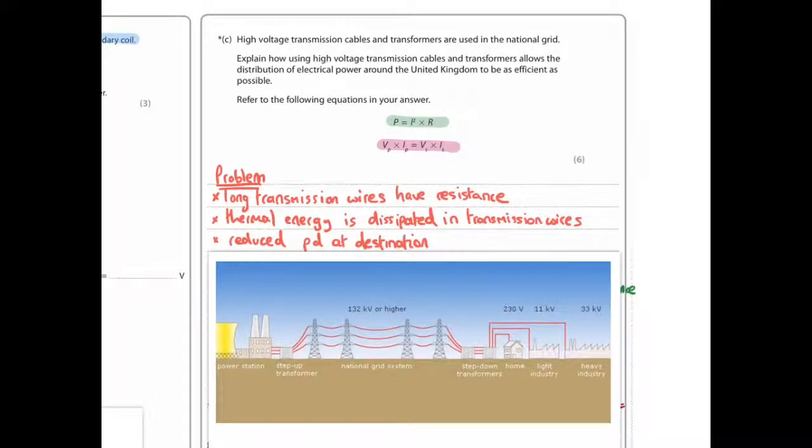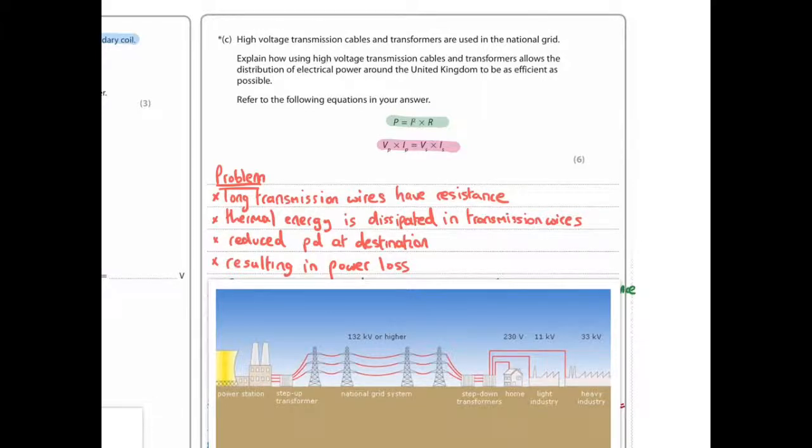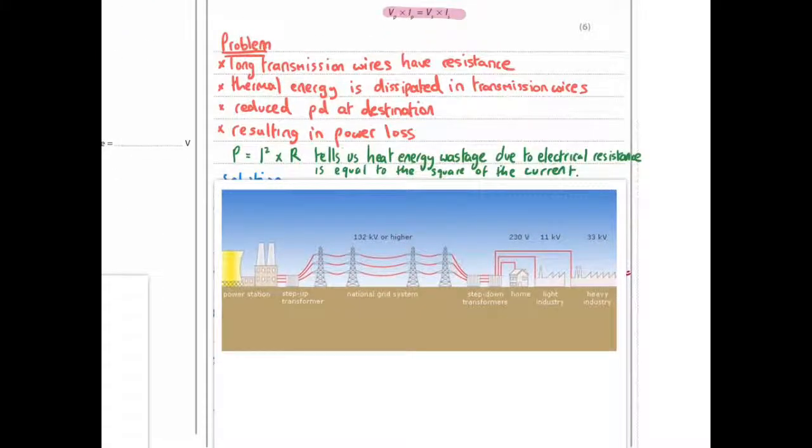This reduces the potential difference at the destination, so there's less voltage, less energy at the destination. That's the problem. And this results in power loss because power is voltage times current.